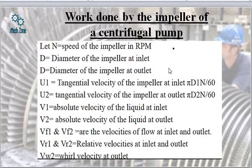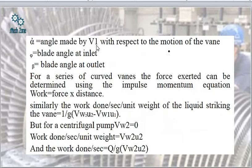Point 1 corresponds to inlet conditions and point 2 to outlet or exit conditions. Vf1 and Vf2 are the flow velocities at inlet and outlet. Vr1 and Vr2 are the relative velocities at inlet and outlet. Vw2 is the whirl velocity at outlet. Alpha is the angle made by the absolute velocity at inlet with respect to the motion of the vane. Phi is the blade angle at inlet and beta is the blade angle at outlet. We must remember all these terms as they will be used in numericals.